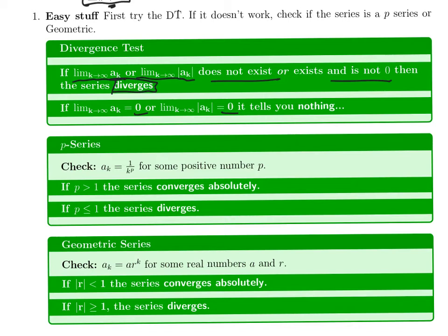It could be a p-series. You can recognize a p-series because you see the index k raised to some positive number, or one over it raised to some positive number. If you see that, or if you see the index raised to a negative number, then it's a p-series. And right away you know, if that positive number is bigger than one, the series converges absolutely. If it is less than or equal to one, the series diverges.